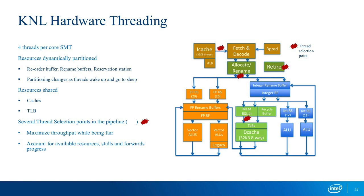Some resources are dynamically partitioned — the reorder buffer, rename buffers, and reservation station — and partitioning automatically adjusts as threads wake up or go to sleep. If you don't use hardware threading, those resources won't be partitioned. However, some resources in the core are statically partitioned — if you enable hardware threading, those will be cut in half or quarters.